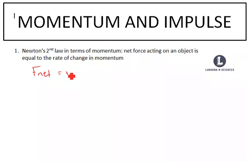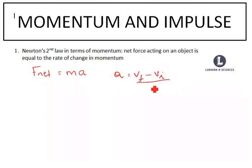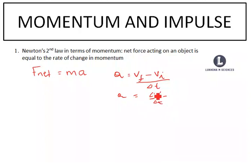Newton's second law has the formula F net = MA. You know that acceleration is the rate of change in velocity, meaning it's final velocity minus initial velocity divided by time — that is the rate of change in velocity, which means we divide by time. Now we have the formula for acceleration.